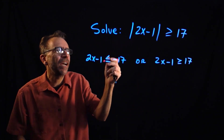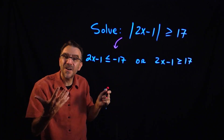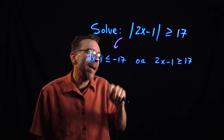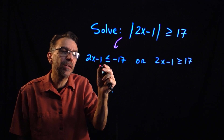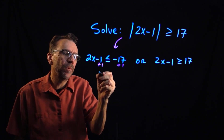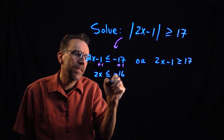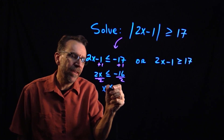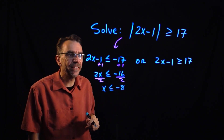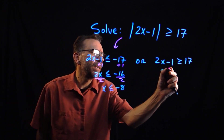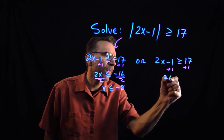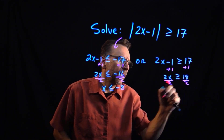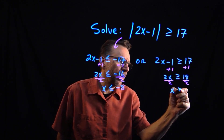That's how we get out from under the absolute value notation — as a compound inequality, you must use the word 'or'; you cannot combine these two. Solving each piece with regular algebra: adding 1 gives 2x less than or equal to negative 16, and dividing by 2 gives x less than or equal to negative 8. On the other side, adding 1 gives 2x greater than or equal to 18, and dividing by 2 gives x greater than or equal to 9.